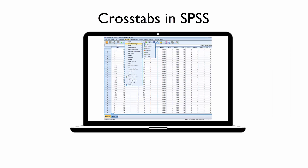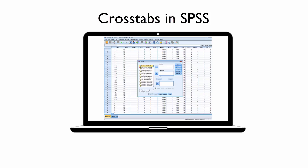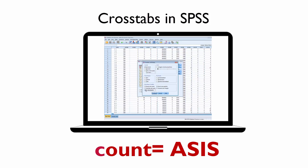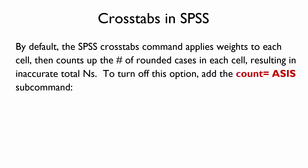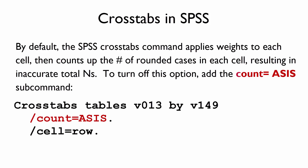One common coding mistake for not matching DHS final report tables when using the cross tab command in SPSS is not including the count option. By default, the SPSS cross tabs command applies weights to each cell then counts up the number of rounded cases in each cell, resulting in inaccurate total ends. Adding this command will allow you to properly match DHS tables.